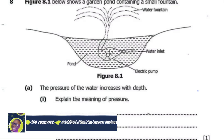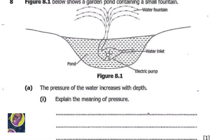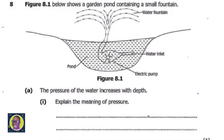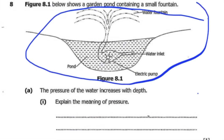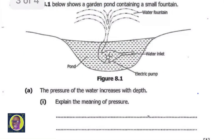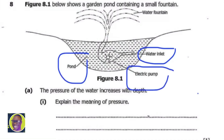Welcome to this physics exam revision session with Tutor B Smart, to help you pass the EZ exam. The question refers to figure 8.1, which shows a garden pond containing a small fountain. The figure shows a pond with a water inlet and electric pump.